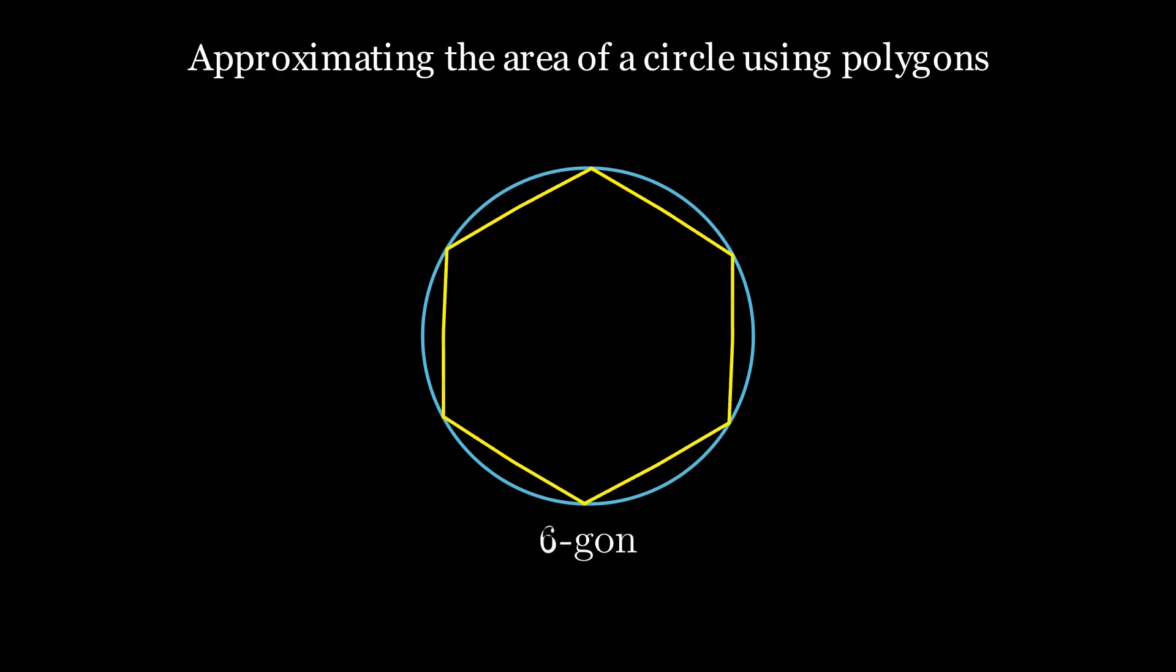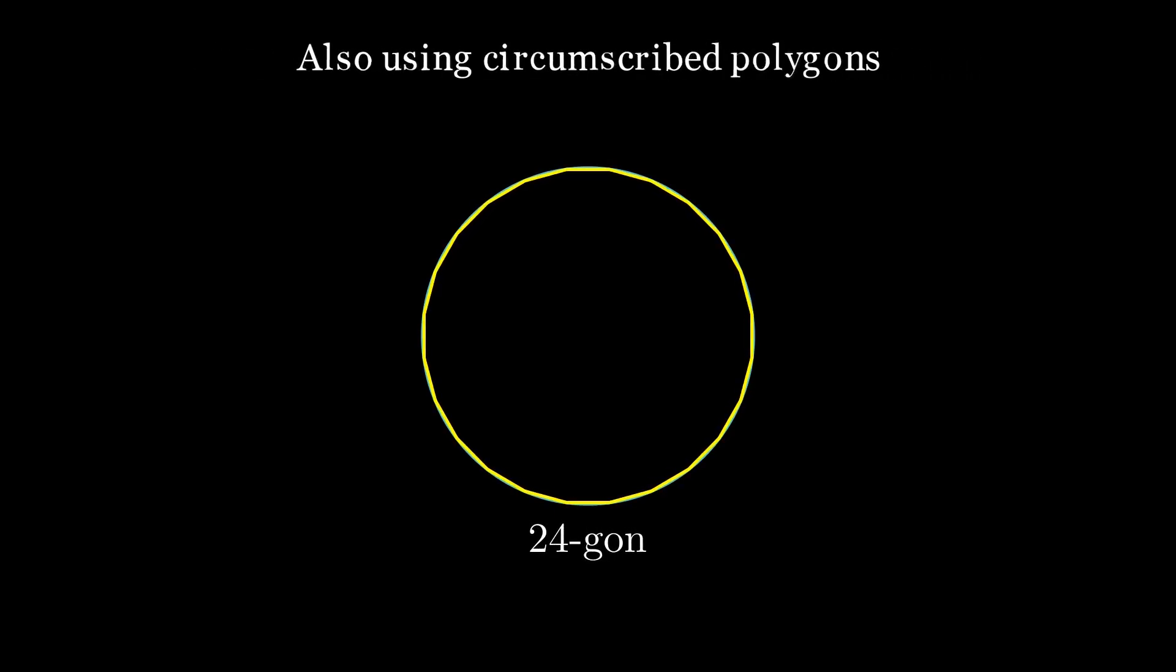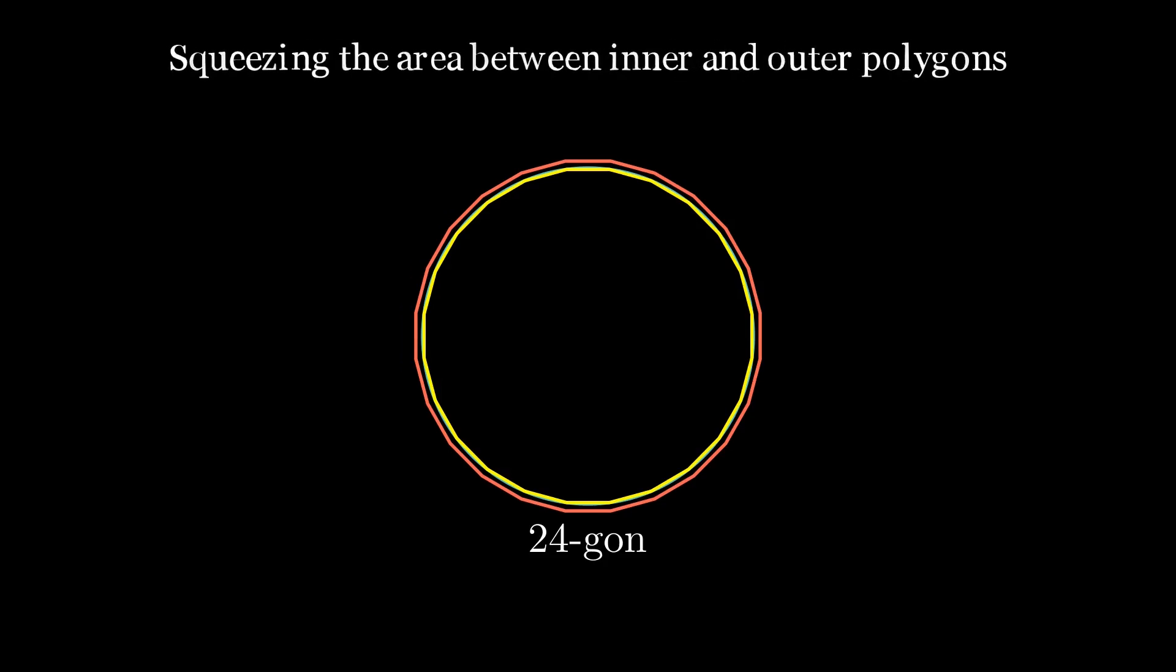the gap between the hexagon and a circle is not much. So he thought, let's increase the number of sides to get a better approximation. And by continuing this method, he could calculate the area of a circle and he could even approximate pi.